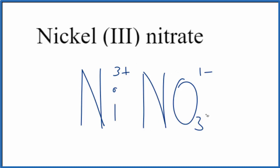The way we can do that, we know that the whole nitrate is one minus. So we'll need three of those to balance out the three plus.